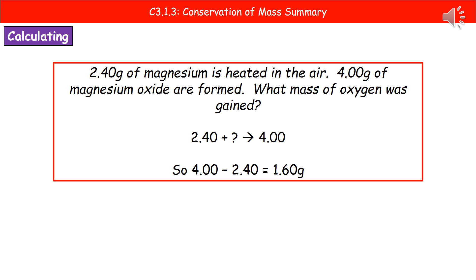So we can actually use this idea of conservation of mass to actually calculate unknown quantities. So you could get a question much like the one on the screen here. 2.40 grams of magnesium is heated in the air. 4.00 grams of magnesium oxide are formed. What mass of oxygen was gained?